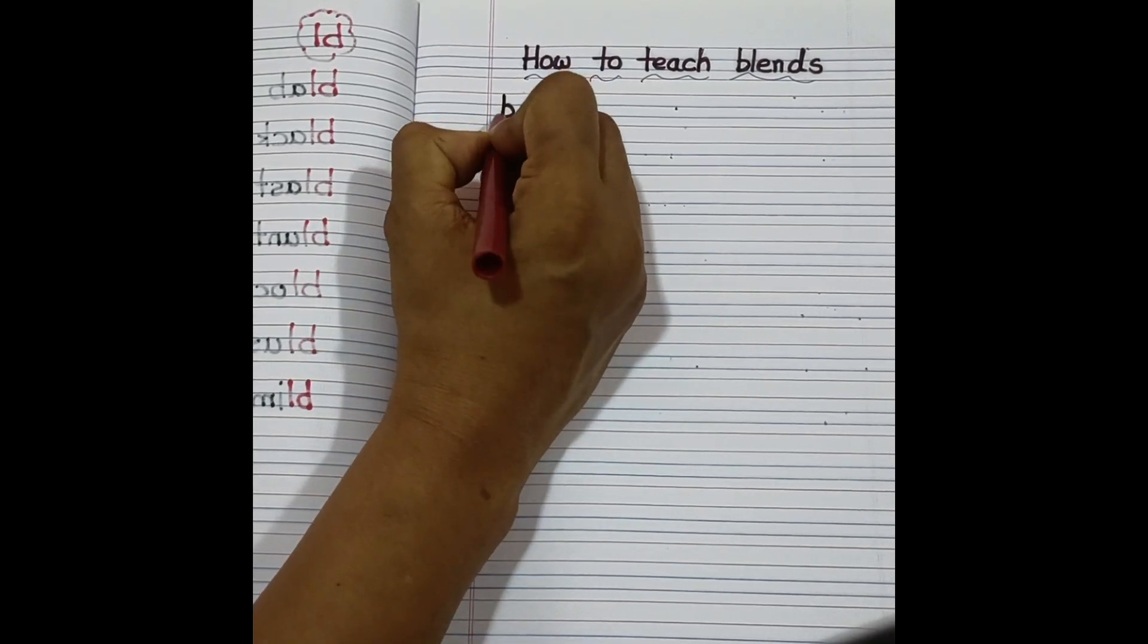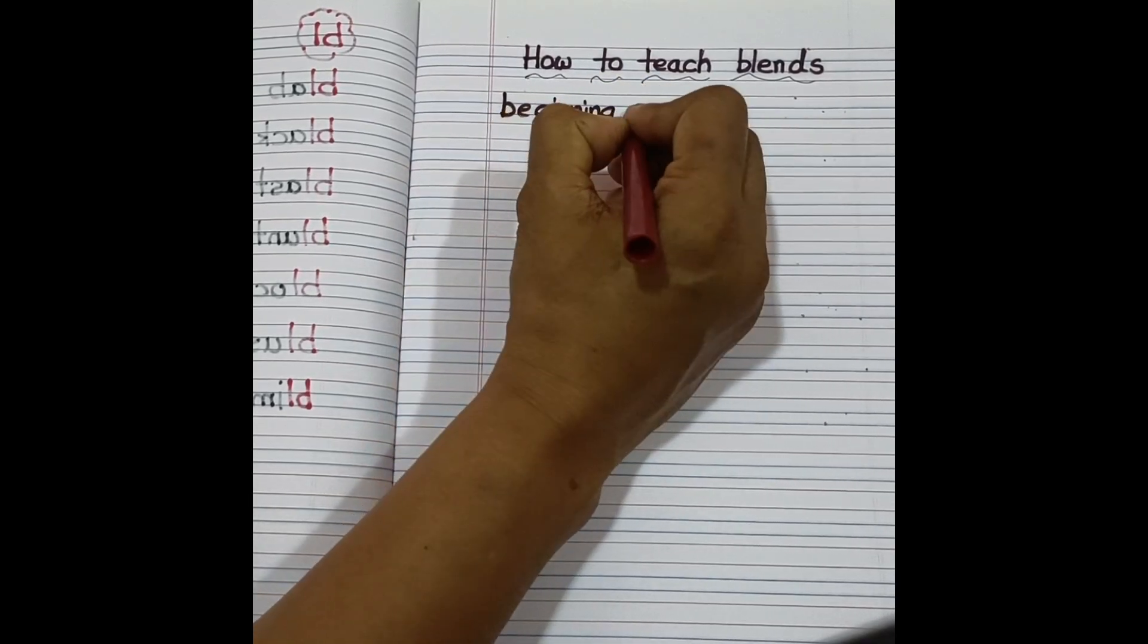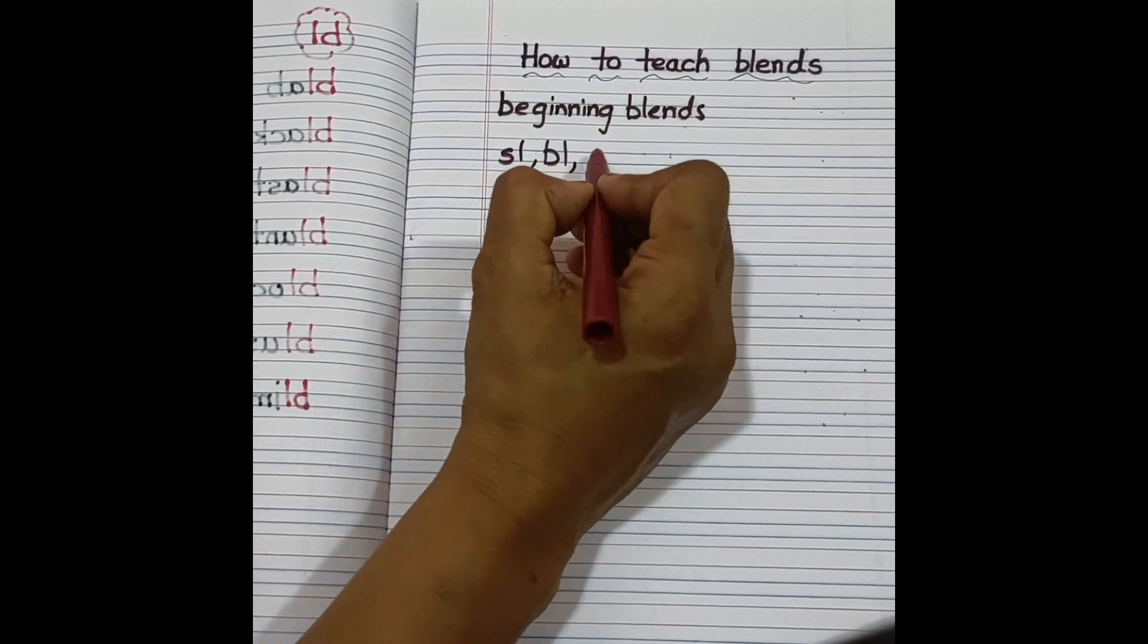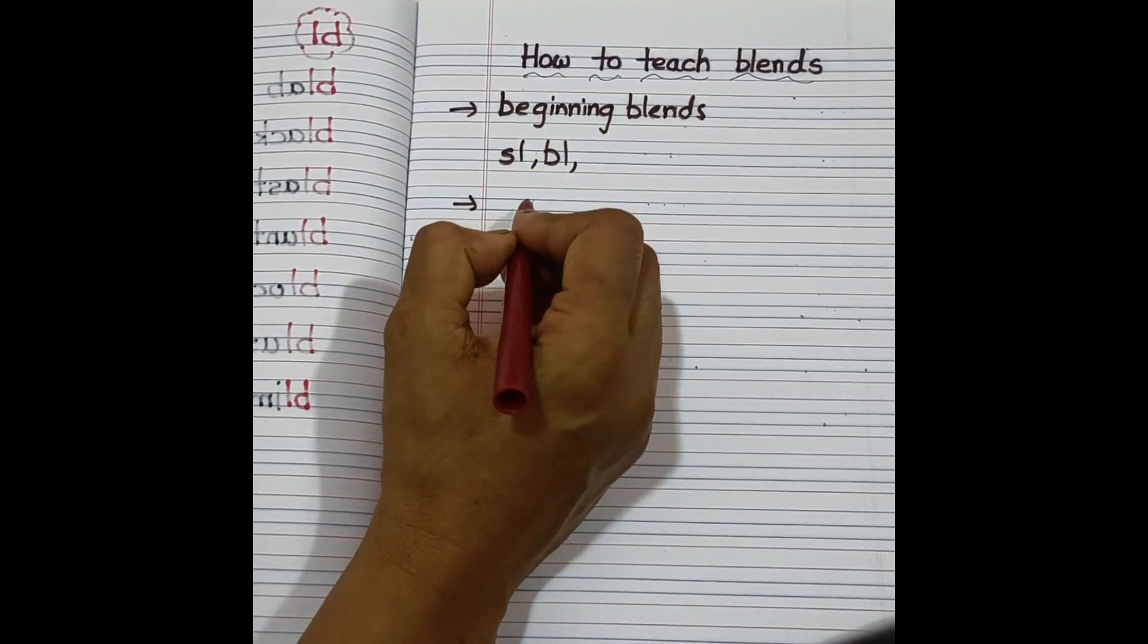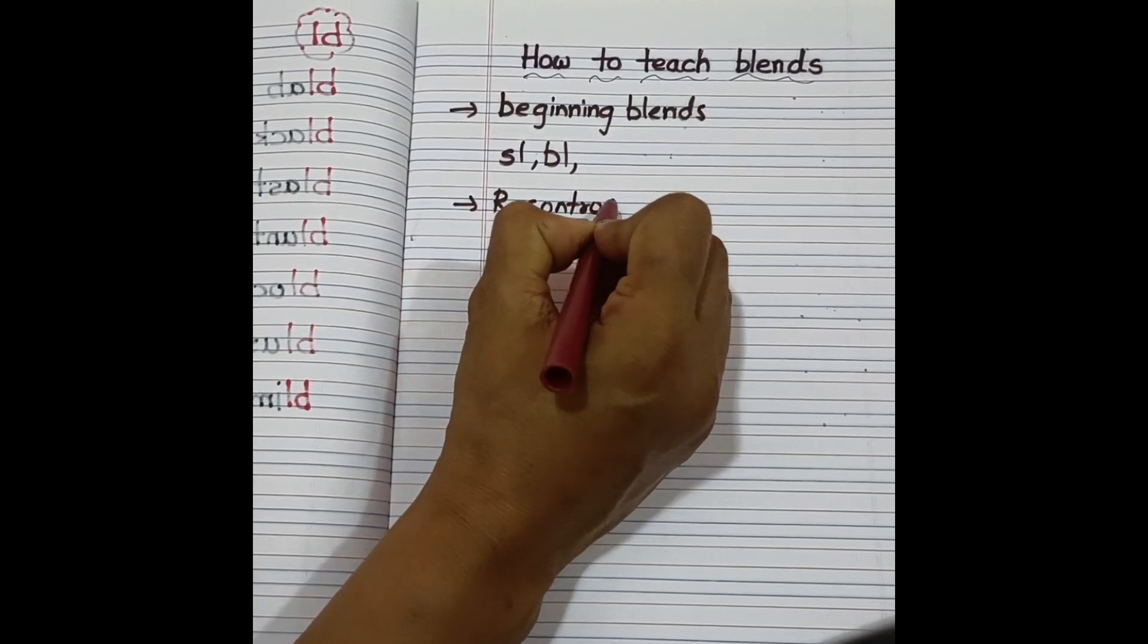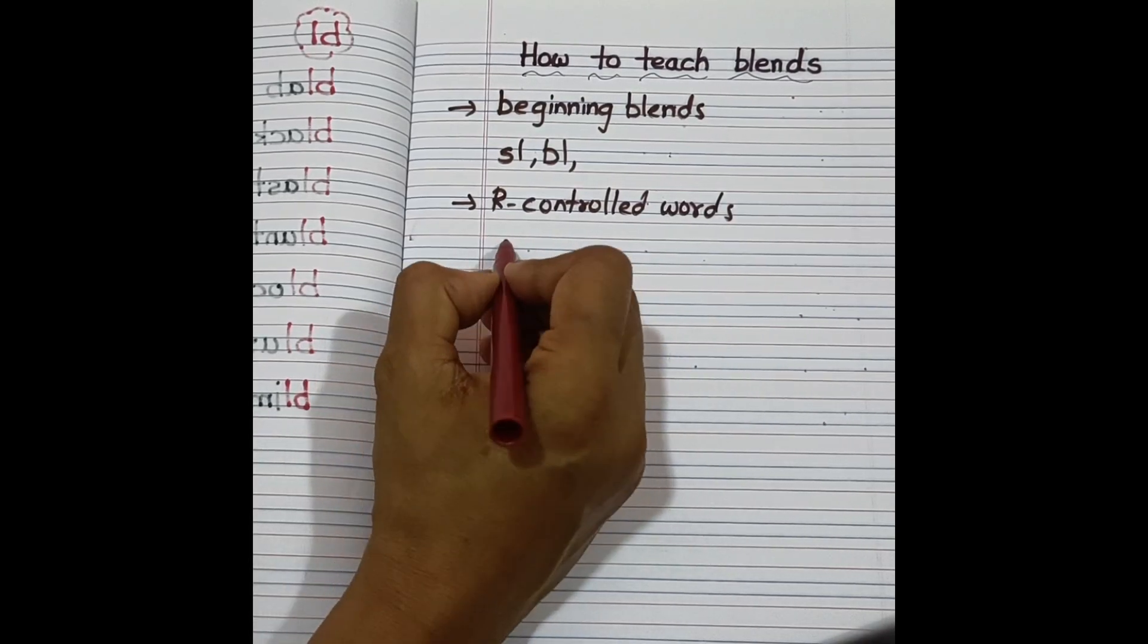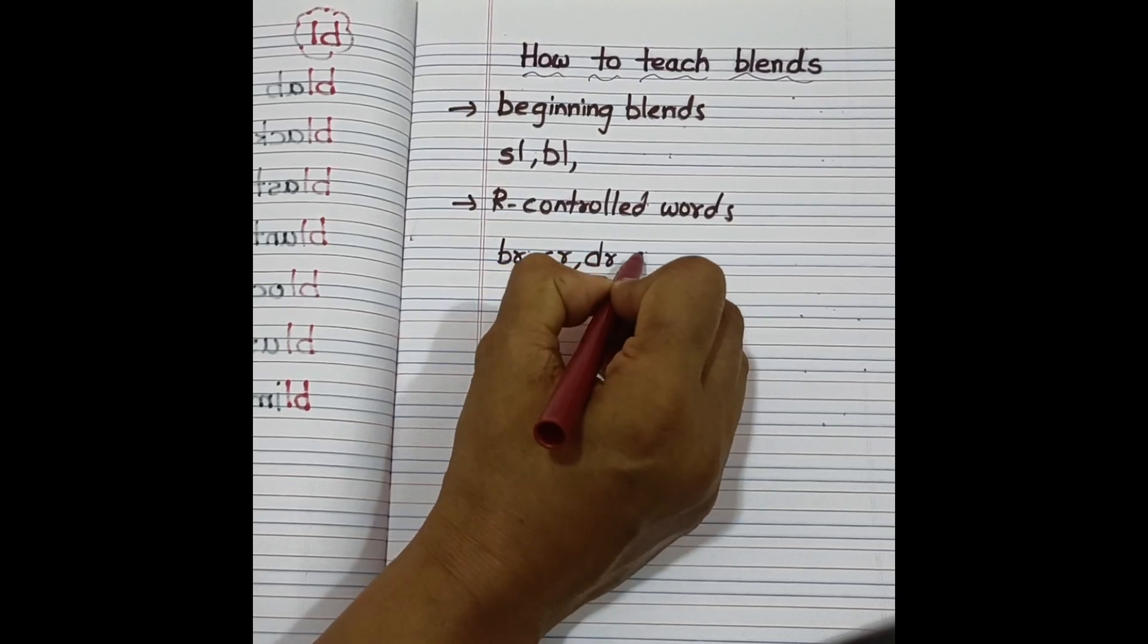So firstly, beginning blends. Beginning blends means sl, bl, all these are beginning blends. First we will teach this, then later r-controlled. R-controlled words, so this we can teach as tricky sound consonant paired with r, like br, cr, dr, sr, all this.